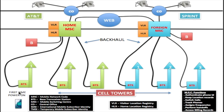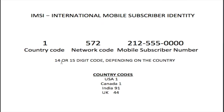Now let's assume the phone receives a home network code. The phone then wants to find out the phone number and country code before communicating back to the MSC. It takes these three pieces of information — the network code, country code, and phone number — and puts them into a code called the IMSI code: International Mobile Subscriber Identity.